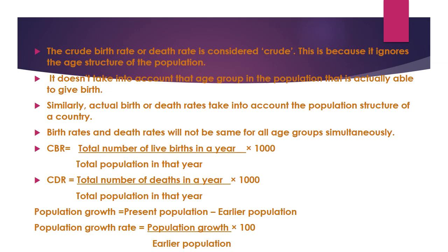The formula for crude birth rate (CBR) is: total number of live births in a year divided by total population in that year, multiplied by 1000. For example, suppose in the year 2020, India's total population is 20,000 and the total number of live births in that same year is 2,000. The CBR = 2000 ÷ 20,000 × 1000.